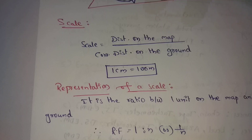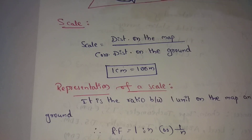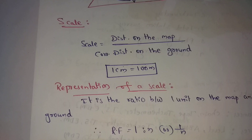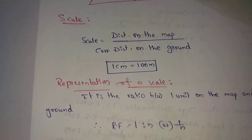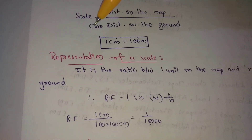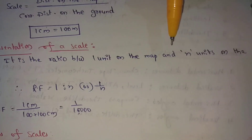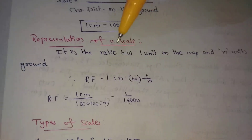Scale means 100 meters on the ground is the actual distance equal to the line drawn on the drawing sheet. This is the scale property. It is a ratio between one unit on the map and N units on the ground.